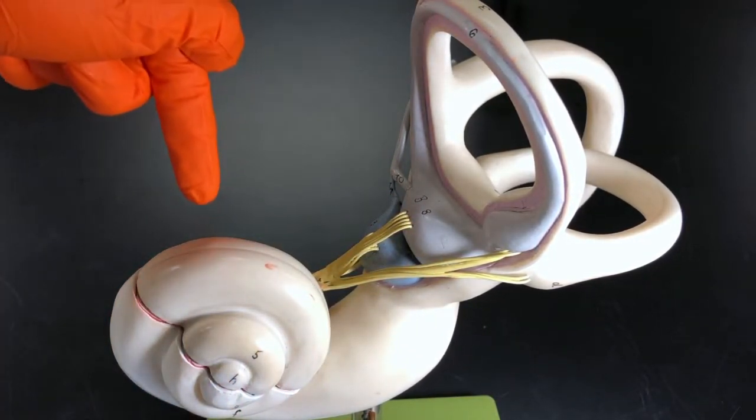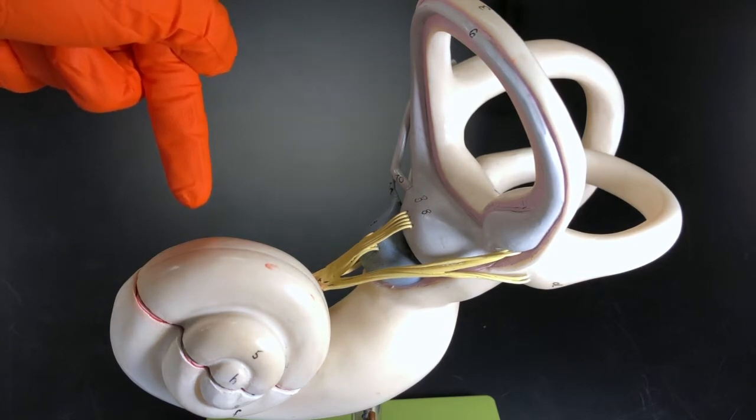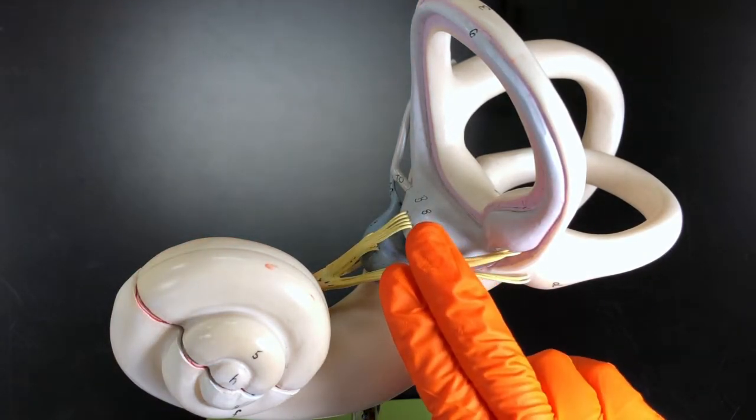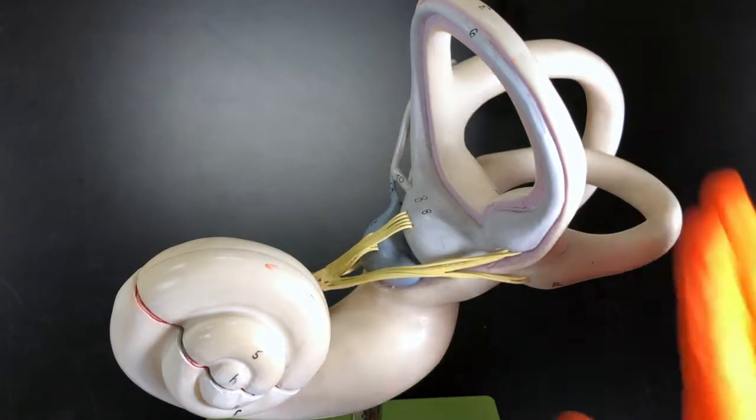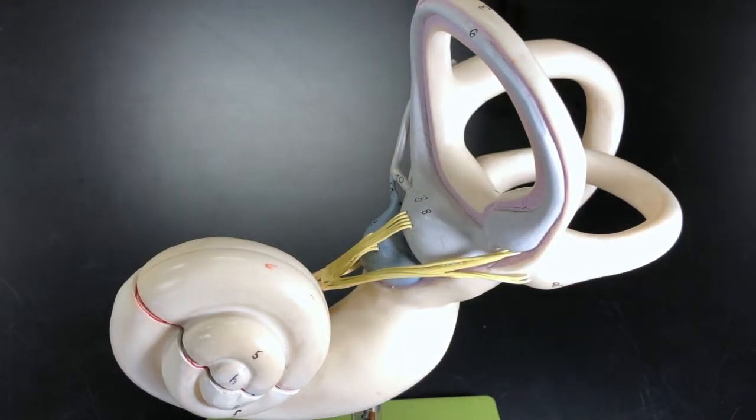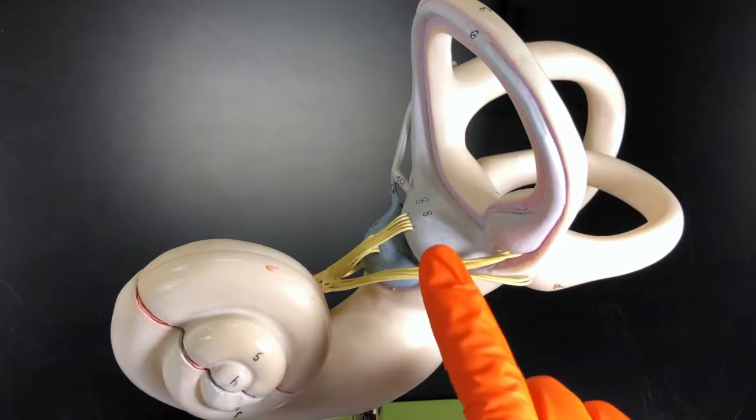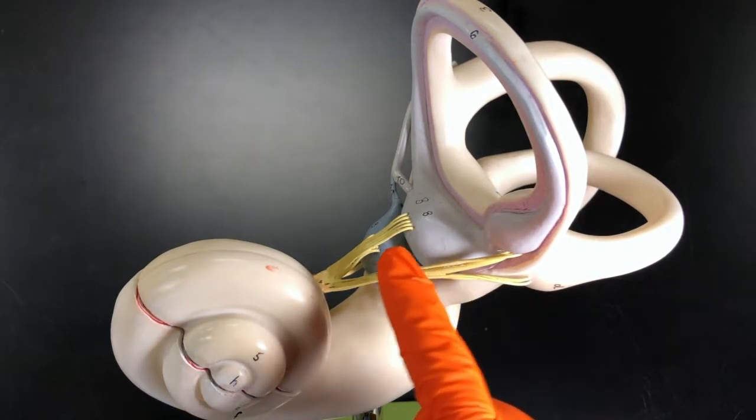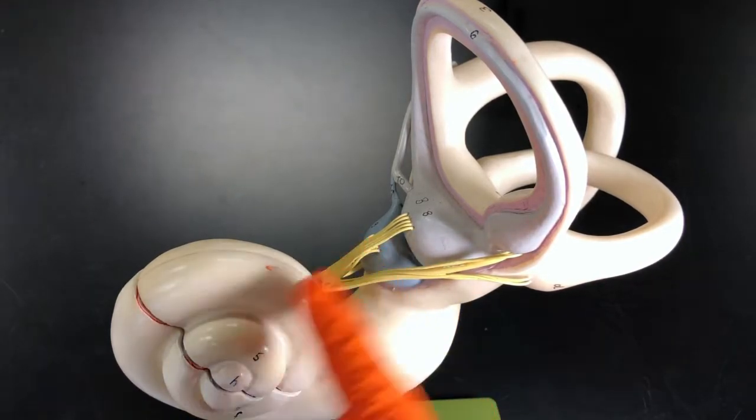So this structure right here, that is the cochlea. And then right here we have the vestibule, and then over here we have the semicircular ducts.